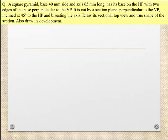The object is a square pyramid with specific specifications. The base side is 40 mm and the axis height is 60 mm. It has its base on HP. With two edges of the base, we have one base edge perpendicular to VP, and two base edges VP parallel — so we have a square. It is cut by a section plane perpendicular to VP and inclined at 45 degrees to HP.